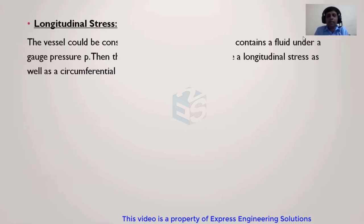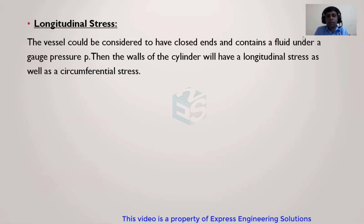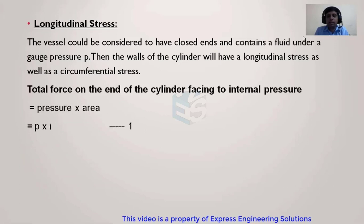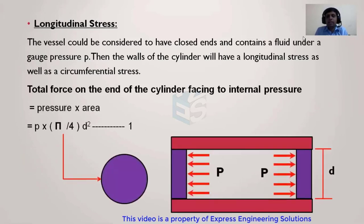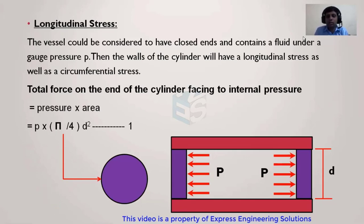Now we are going into the calculation for the longitudinal stress. The vessel is considered to have closed ends and contain fluid under gauge pressure P. The cylinder will have a longitudinal stress as well as a circumferential stress. Looking at the figure, there is a cylinder with a closed end. When pressure is applied on the closed end, it tries to push the ends away from each other, generating a stress or pull along the length of the vessel.